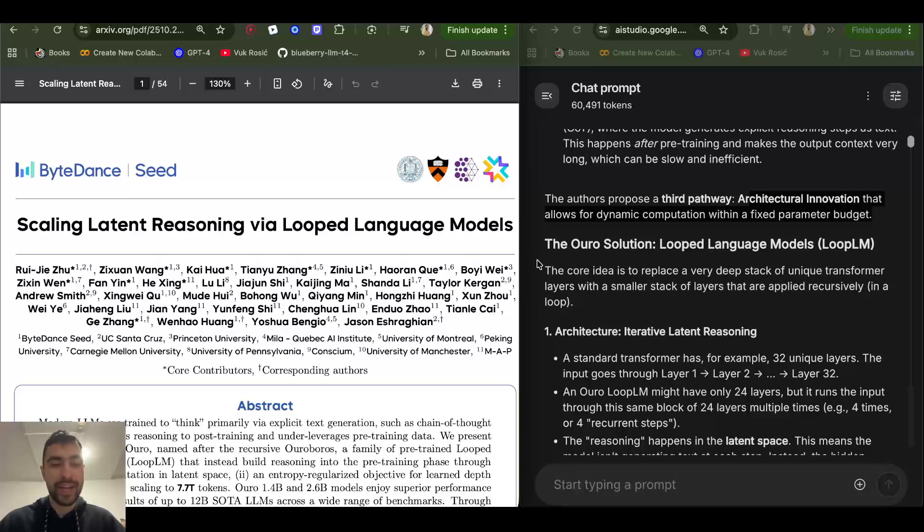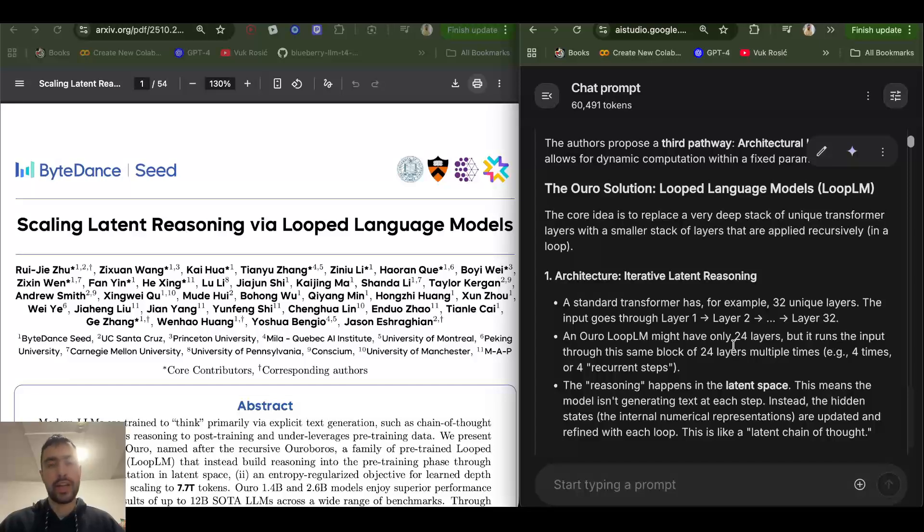So instead of having a bunch of layers stacked up in a transformer like 32 layers, this large language model will have fewer layers like 24, but then it will pass the same thought, the same token multiple times throughout all of these layers, which doesn't happen in a normal transformer. In a traditional large language model you have a token that's input, a sequence of tokens, it goes through all of the 32 layers and generates the next token.